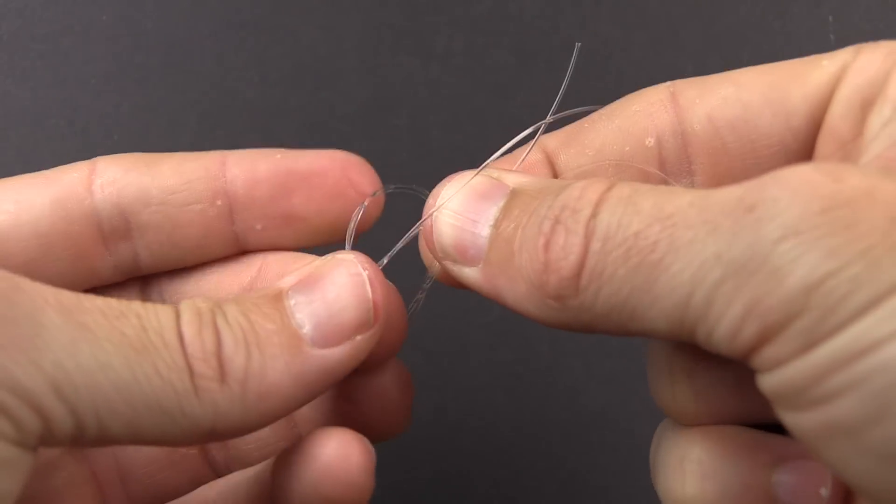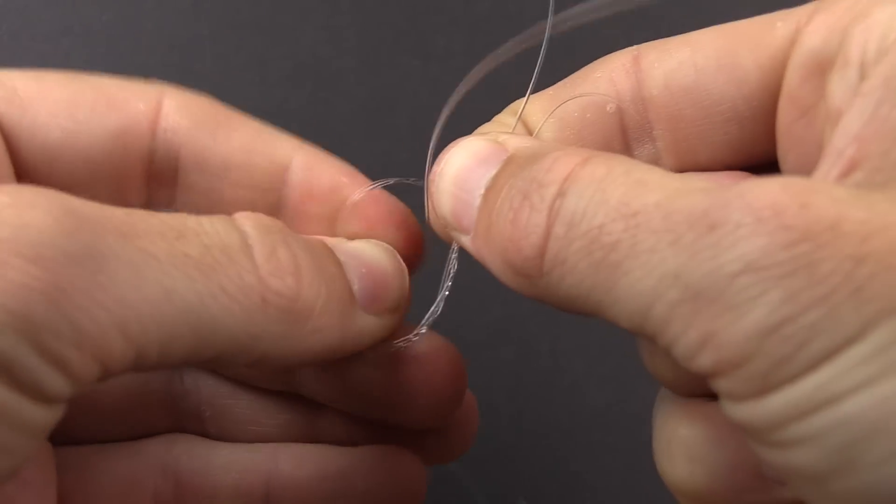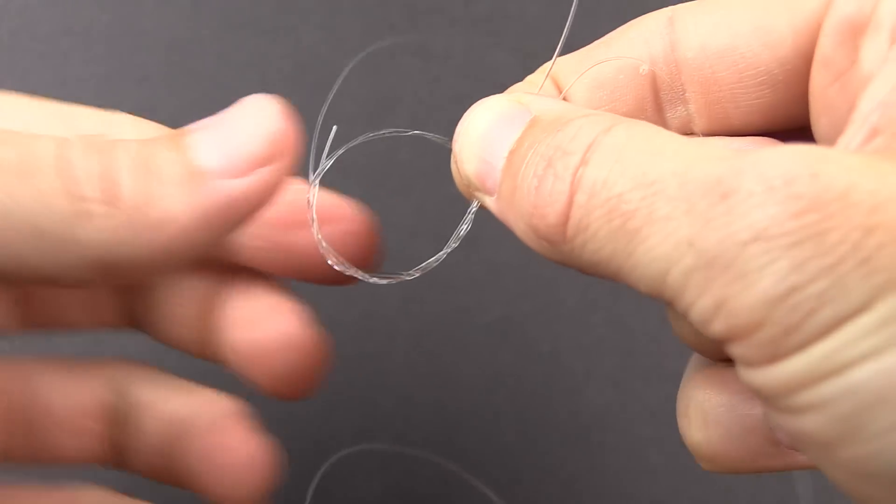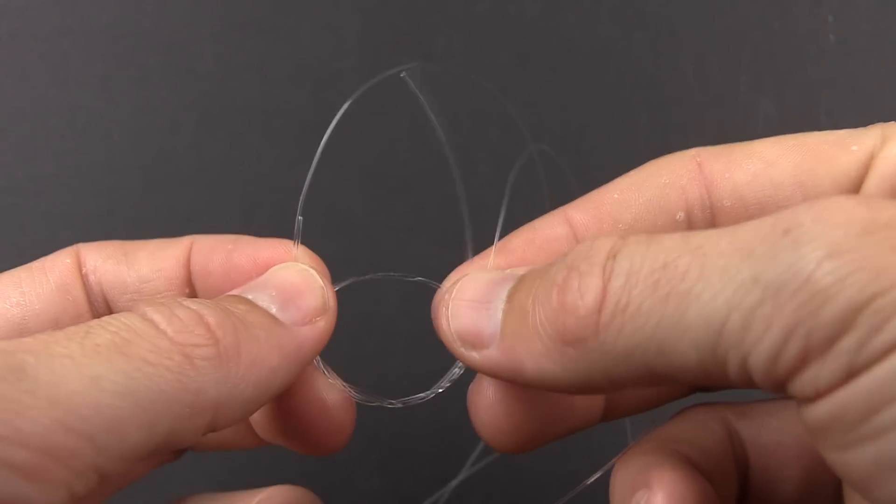The third one is just the same exact thing - do the same thing three times. Thread the leader all the way through. Once that's complete, you should have something that looks a bit like this.